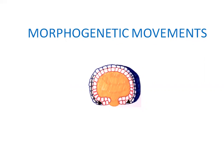After fertilization, through successive cleavages, fertilized eggs form a mass of cells called blastomeres. On the basis of their specific characteristic features, they migrate from the surface to inner portions. There is a cavity called the blastocoel.